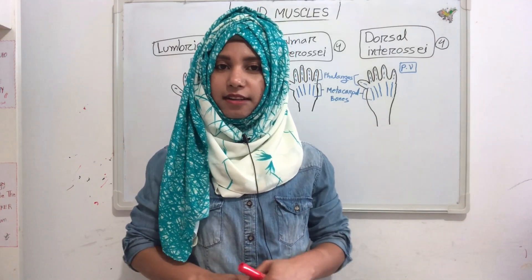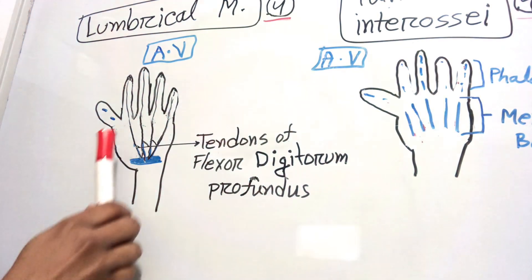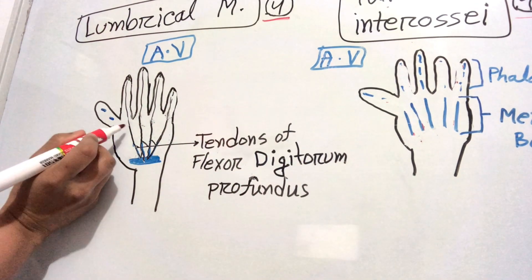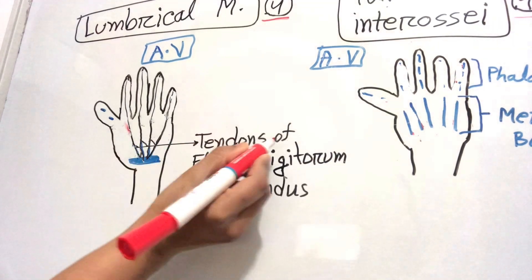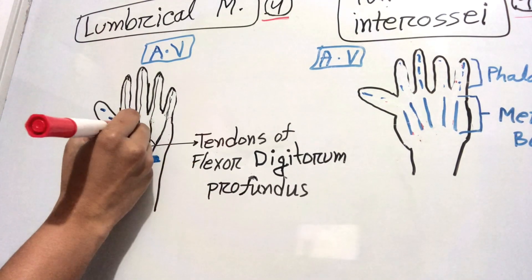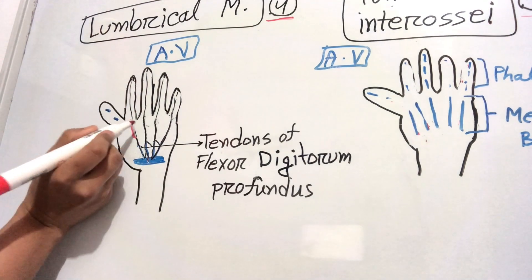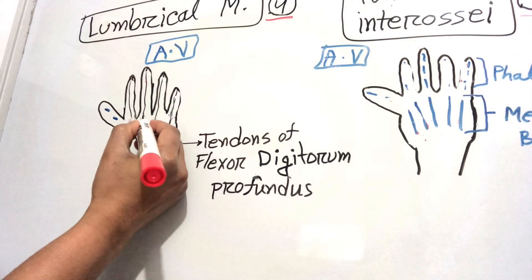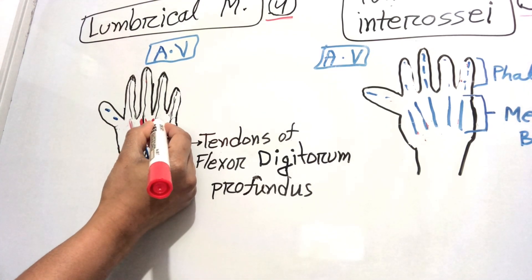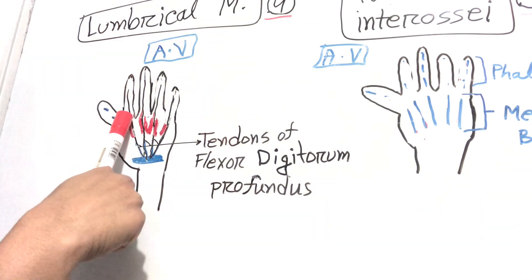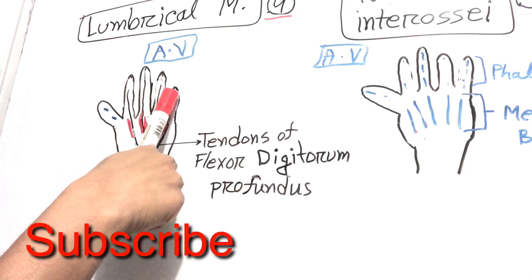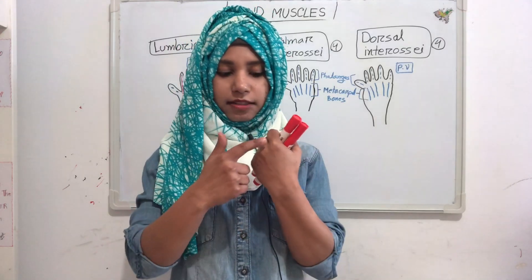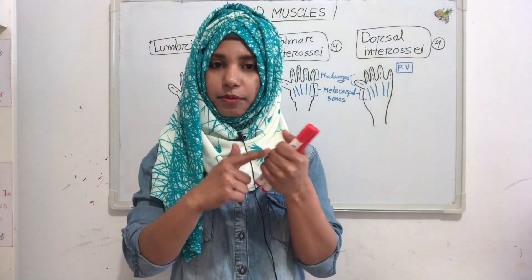Now we will see our lumbrical muscles in diagram. We have four lumbrical muscles. The first lumbrical originates from the tendon of flexor digitorum profundus of the second digit. The second lumbrical originates from the same tendon of the third digit. The third lumbrical originates from tendons of the third and fourth digits. The fourth lumbrical originates from tendons of the fourth and fifth digits. Their insertion is into the extensor expansion on the dorsum at the base of the distal phalanx. The lumbrical muscles flex the metacarpophalangeal joint and extend the interphalangeal joints of the second to fifth digits.